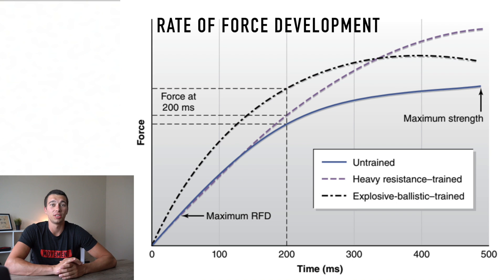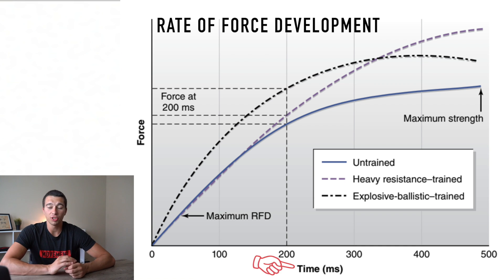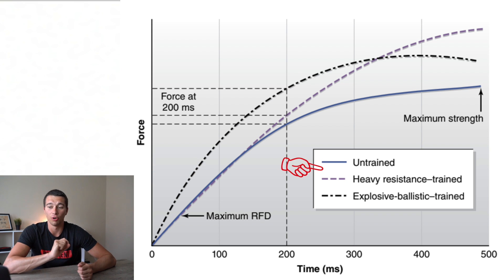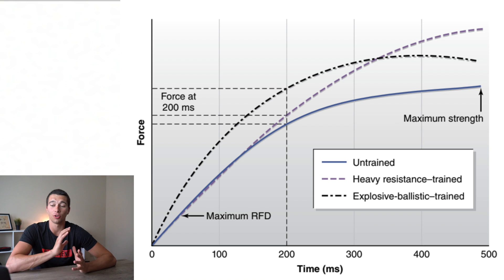This is the graph we're going to use to break down the difference between rate of force development and max force. This is our rate of force development graph. What you'll see here is that there's a time axis on the bottom going from zero seconds to half a second, and the dotted lines represent different athletes. Time is on our x-axis, force is on our y-axis, and the dotted lines are different athletes showing how fast they are producing force.